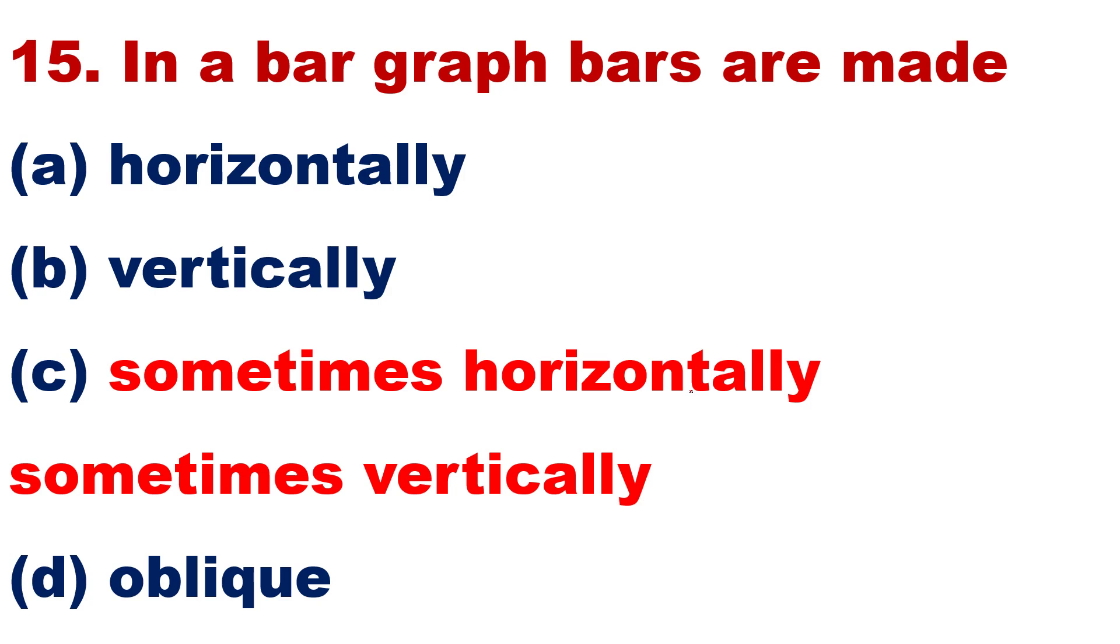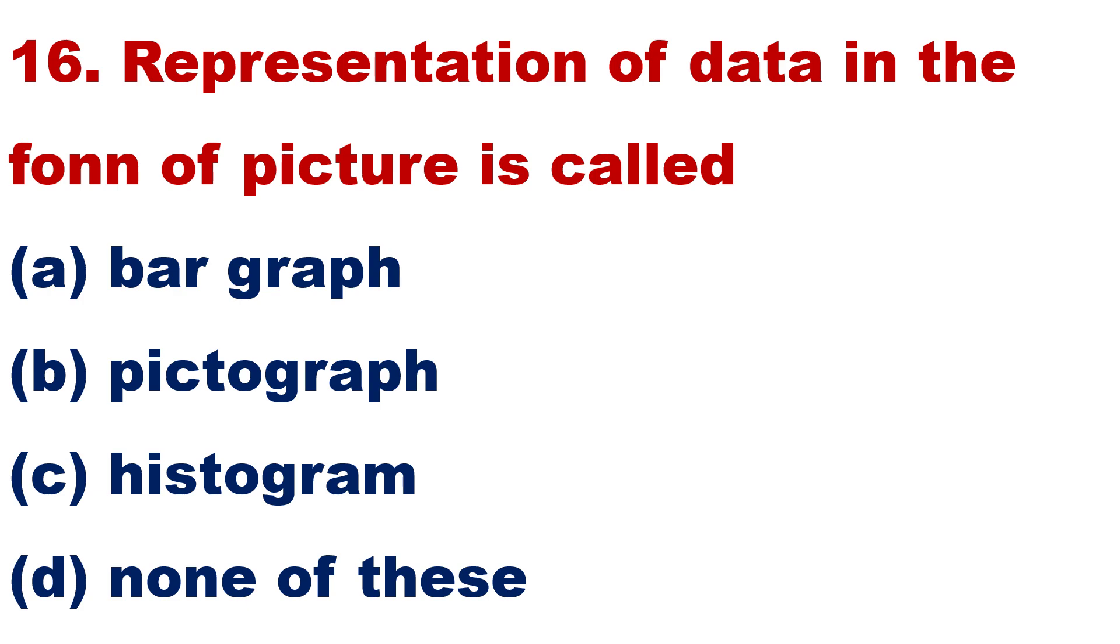Is there any answer in the 4 options? You take your answer. Representation of data in the form of picture is called, in the form, F-O-R-M, in the form of picture is called picture. Kis mein hota hai bhai? Bar graph mein hota hai? Histogram mein hota hai? Ya none of these mein hota hai? Jo mainne chhod diya shayad ushi mein hota hai.